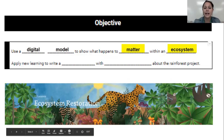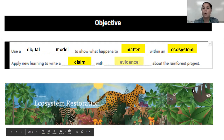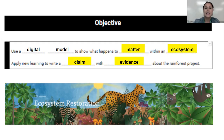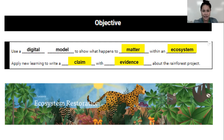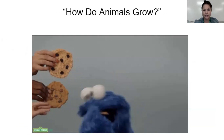We are going to apply new learning from today to write a claim with evidence about the rainforest project. This is an assignment we have already done — we are doing the same thing, writing a claim with evidence about the rainforest project in Costa Rica, and we are going to take the learning from the last couple of weeks to build on our answers.